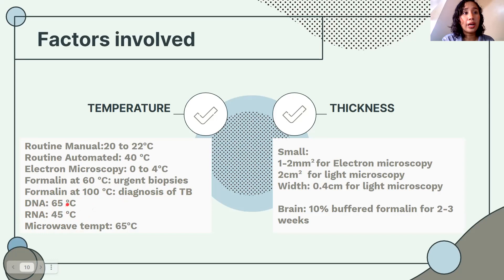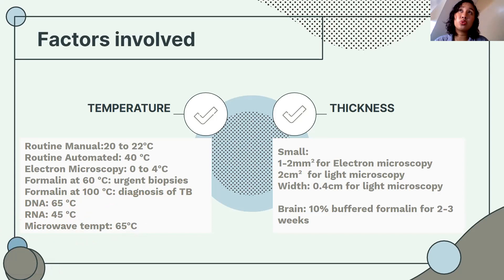There is also microwave processing, which can increase turnaround time and hasten tissue processing. You expose your tissue to microwave radiation at 65 degrees Celsius with an oscillation frequency of 2,450 MHz. The thickness of tissue is also important — 1 to 2 mm for electron microscopy and 2 cm squared for light microscopy.